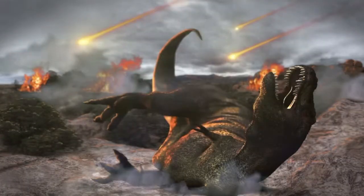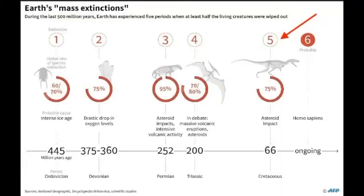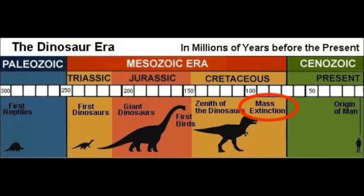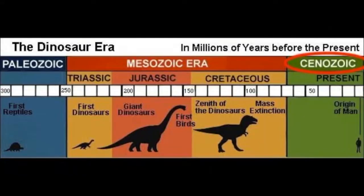The Cretaceous-Tertiary Extinction, also known as the KT Event, was a sudden mass extinction of almost 80% of the plant and animal species on Earth. It marked the end of the Cretaceous Period and with it the entire Mesozoic Era, opening the Cenozoic Era that continues today.